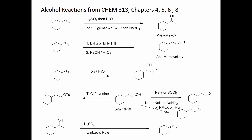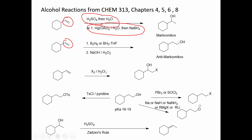We can add water to alkenes — the elements of water. One reagent that does that is sulfuric acid/water, or more reliably mercuric acetate and sodium borohydride, giving the Markovnikov addition product. When we use the boron reagent and add it to the alkene we get the anti-Markovnikov orientation. We can also add one OH group and one halogen by treating alkenes with halogens in the presence of water, giving us the halohydrin — also considered Markovnikov orientation because of where the oxygen ends up.